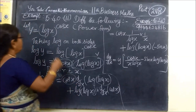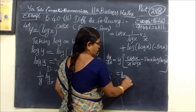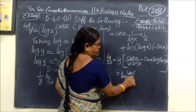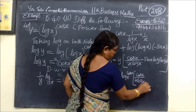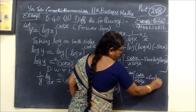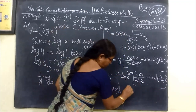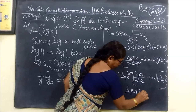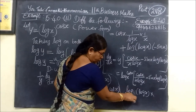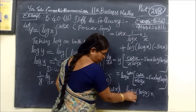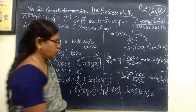Now y is going to be replaced — y is log x to the power cos x. So dy/dx equals (log x)^(cos x) multiplied by bracket: cos x divided by x log x, minus sin x into log of log x. This is the answer. In this way, you write log of log x.